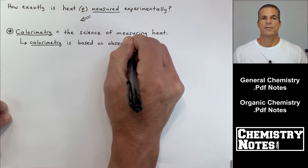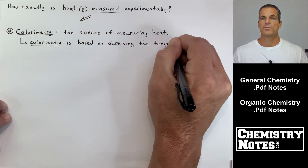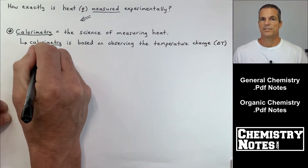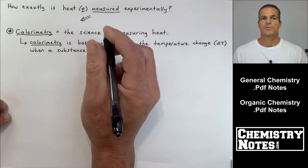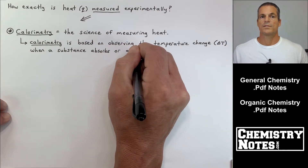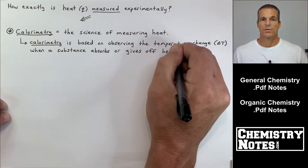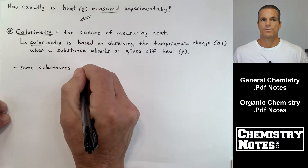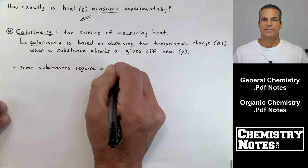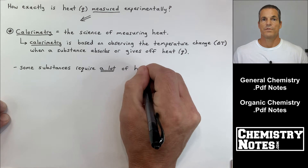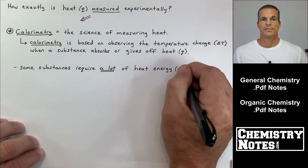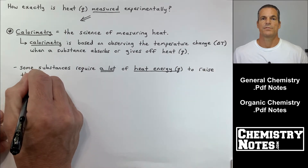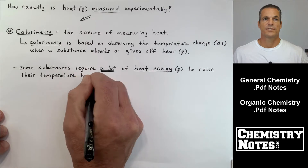Calorimetry is based on observing the temperature change, delta T, where delta T is final temperature minus the initial temperature. Calorimetry is based on observing the temperature change when a substance absorbs or gives off heat. Now, some substances require a lot of heat energy in order for their temperature to go up, while some substances don't — things like water versus metals.